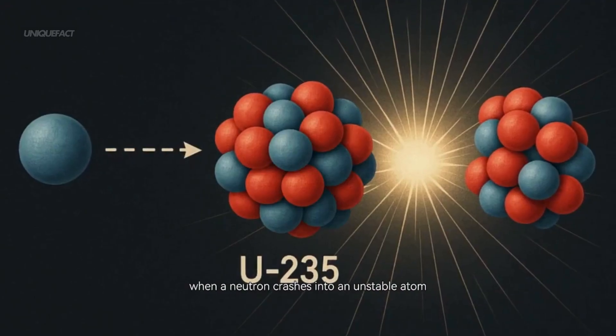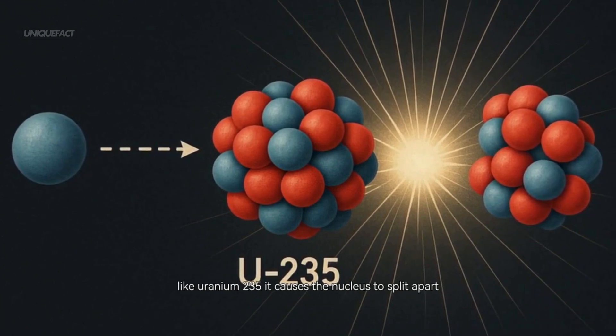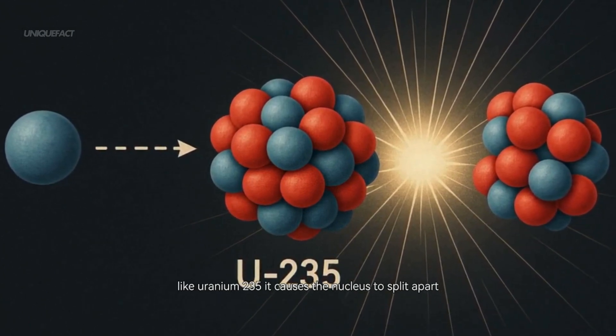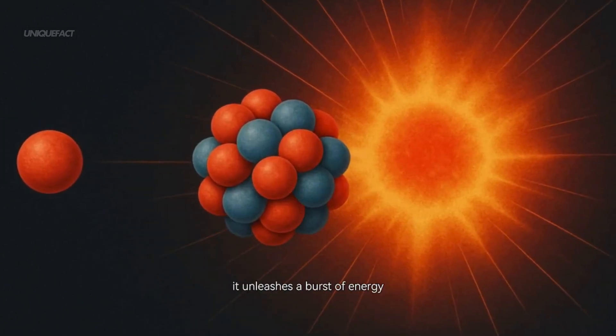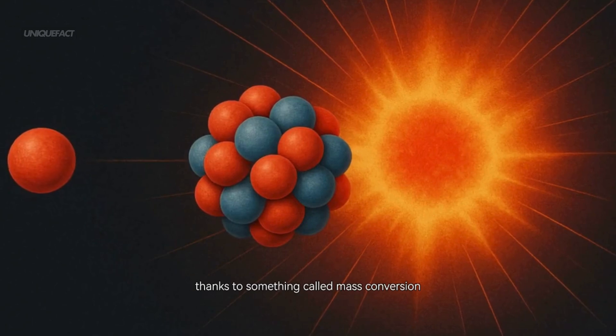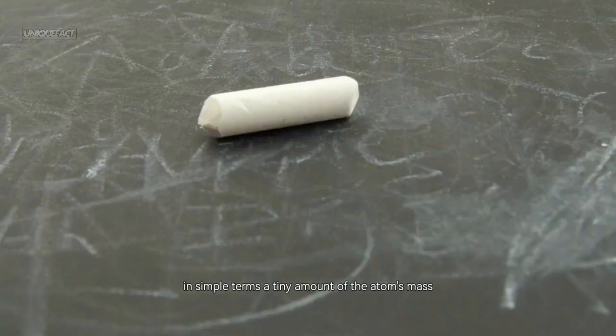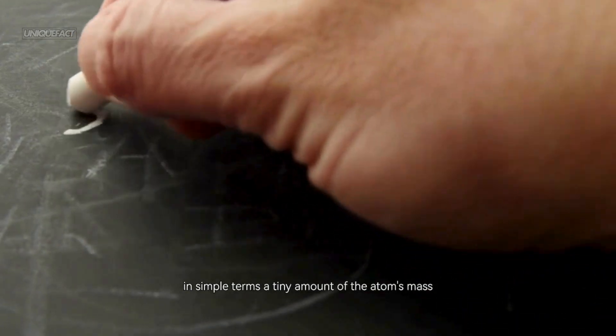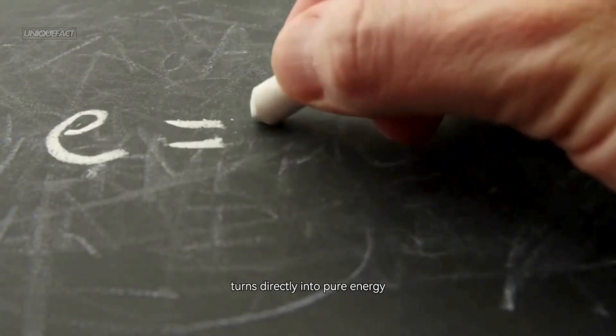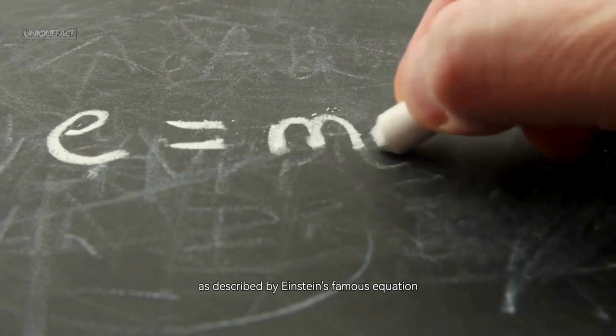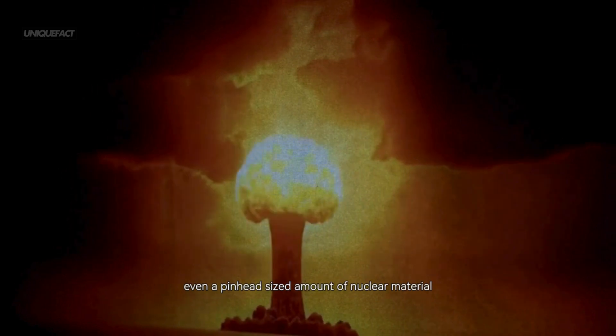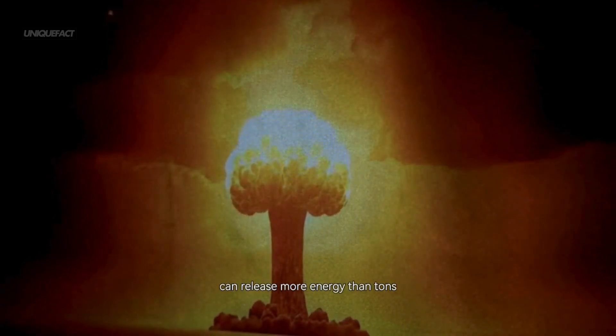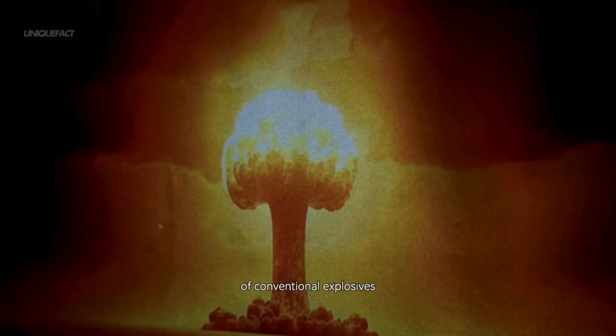When a neutron crashes into an unstable atom like uranium-235, it causes the nucleus to split apart in a process called nuclear fission. This split doesn't just break the atom, it unleashes a burst of energy thanks to something called mass conversion. In simple terms, a tiny amount of the atom's mass turns directly into pure energy, as described by Einstein's famous equation E=mc². That means even a pinhead-sized amount of nuclear material can release more energy than tons of conventional explosives.